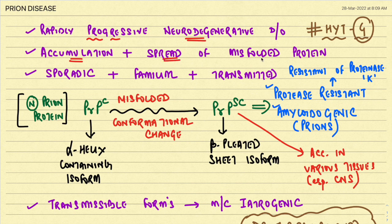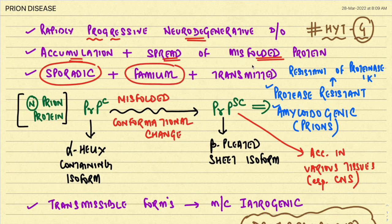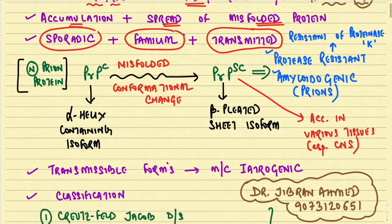This condition can either occur in a sporadic manner, or it can be inherited in a familial form, or it is also transmissible — meaning it can spread from one person to another by iatrogenic means. We will discuss the transmitted forms in detail later on.